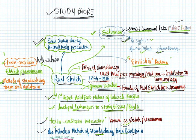Salvarsan, the medicine made from an arsenic compound, is also called the 'magic bullet.' It is used in the treatment of syphilis. After this discovery, the word 'chemotherapy' became very famous. There is also a bacteria called Ehrlichia, which was named in his honor.